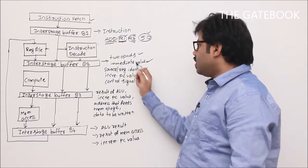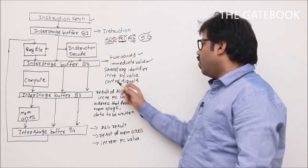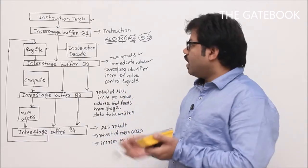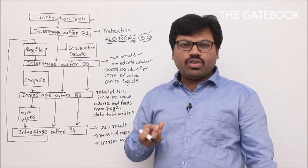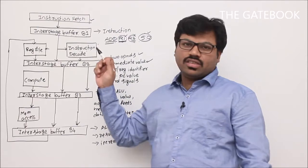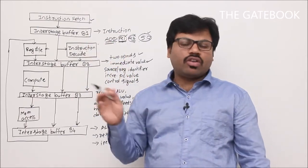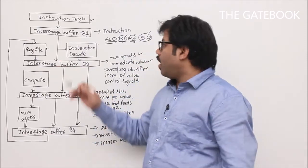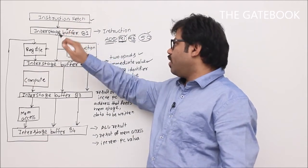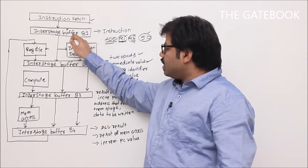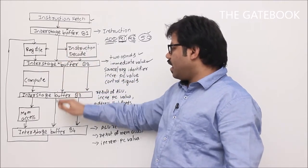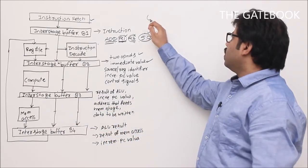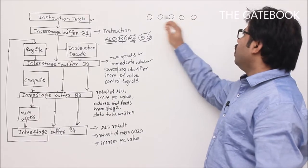Buffer B2 also contains the incremented PC value. The reason is that the program counter is incremented in the fetch stage. That incremented PC value will first be pushed into buffer B1, then in the next clock cycle forwarded to B2. This is because all these buffers are connected in a chain, and for every clock cycle, data moves from one buffer to the next.